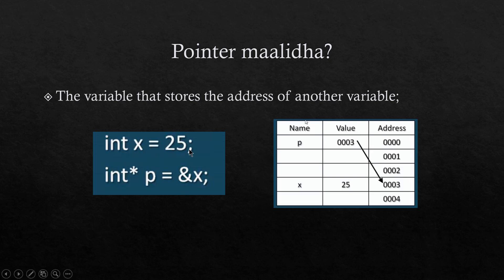int x equal to 25 — so automatically x is an integer. For data, it is allocated by the system, and that is a hexadecimal number.